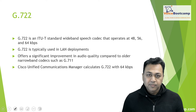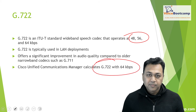G.722 is an ITU standard wideband speech codec that operates at 48, 56, and 64 kilobits per second. It is typically used in LAN environments and offers a significant improvement in audio quality compared to G.711. Cisco Unified Communications Manager by default uses G.711 at 64 kilobits per second, but when you enable the codec within a region, by default it tries to use G.722.